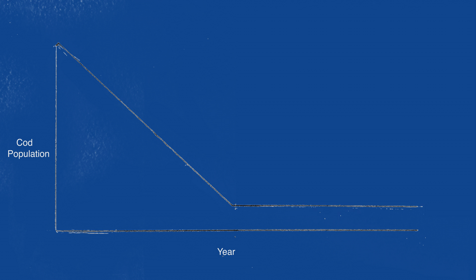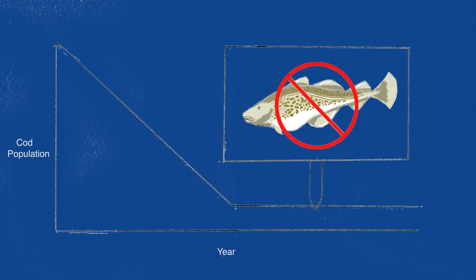Despite the installment of a groundfish moratorium, the Atlantic cod has yet to make a recovery. This event can be partially explained by the concept of trophic cascades.